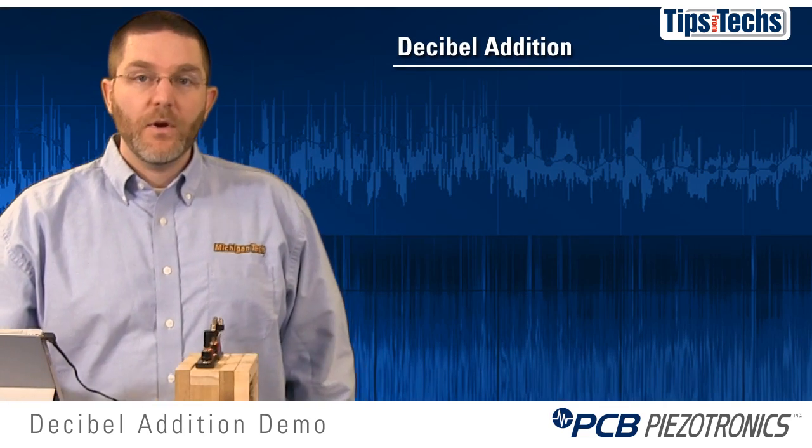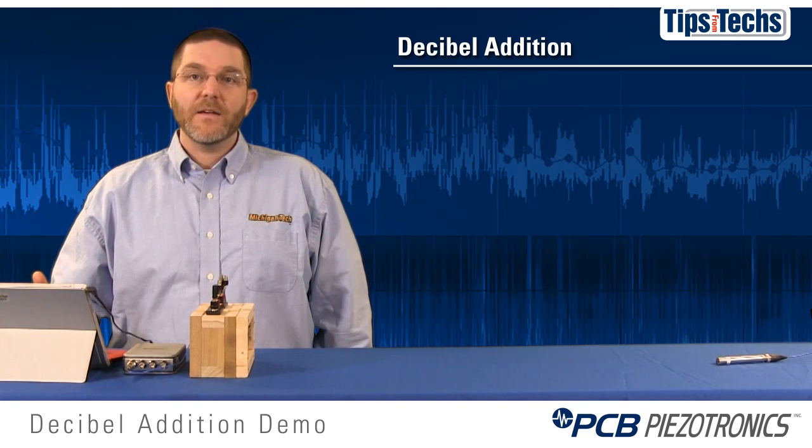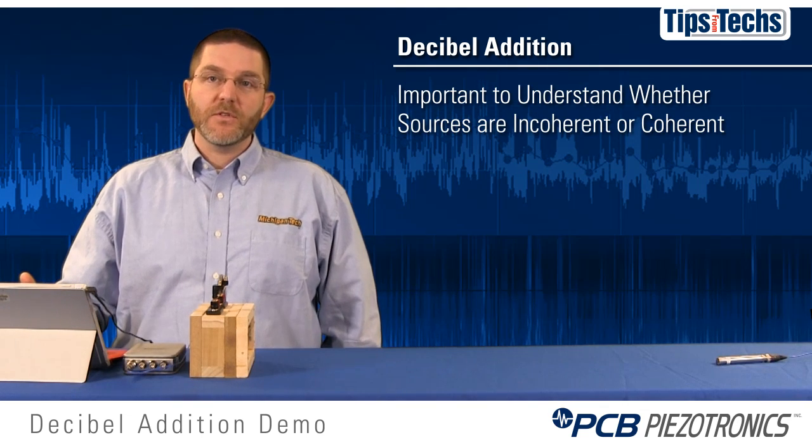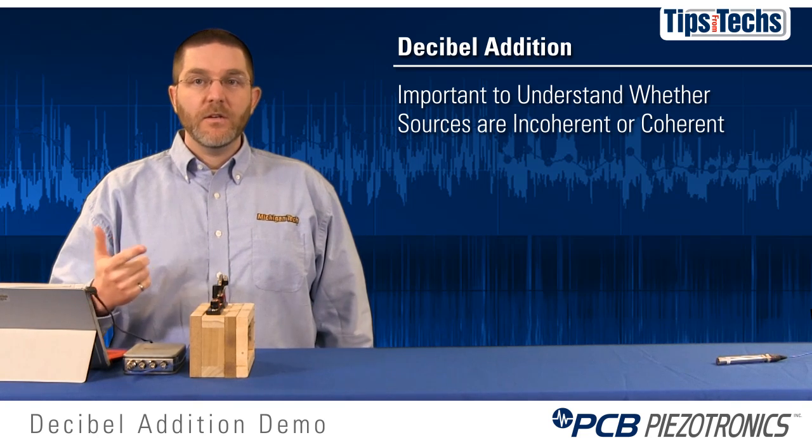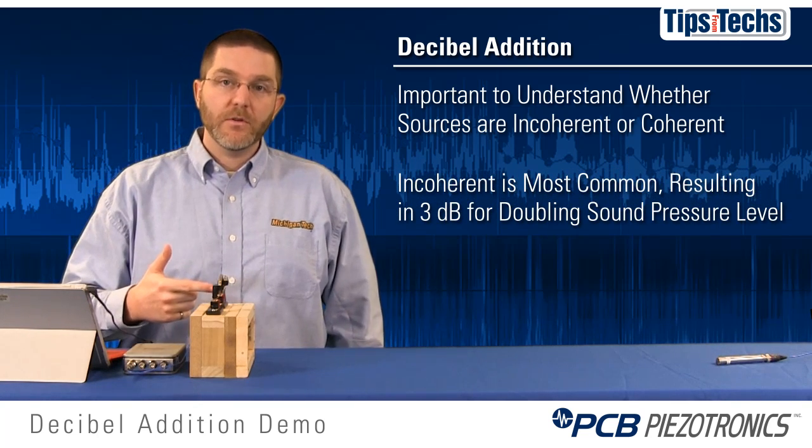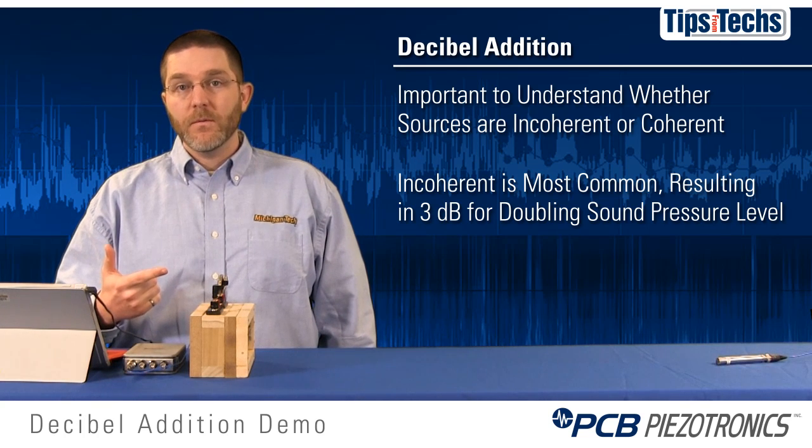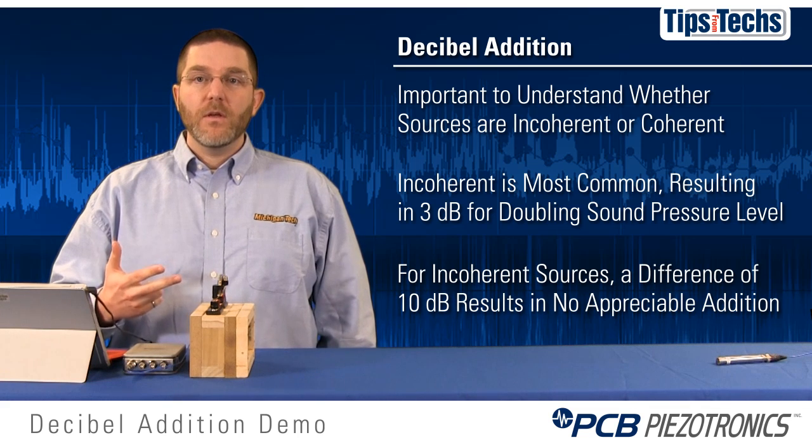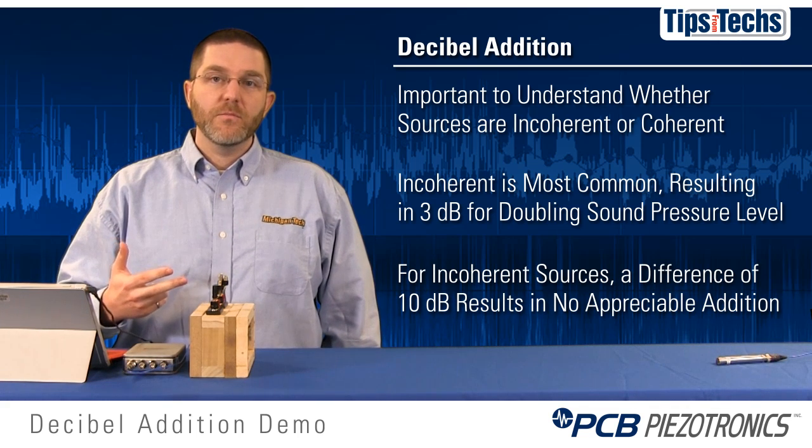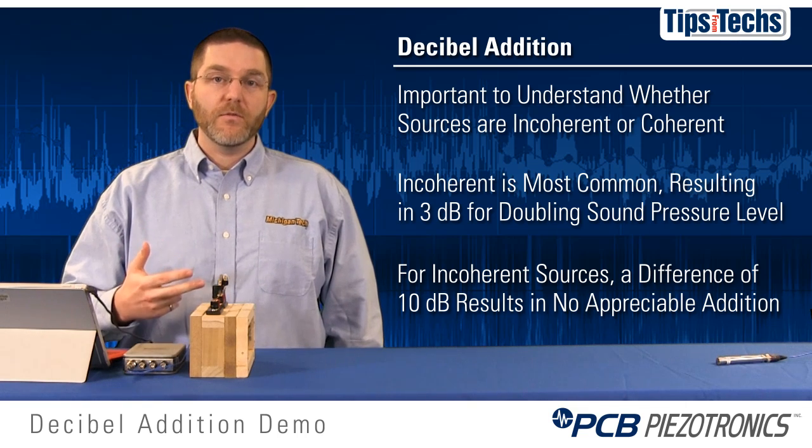The takeaways from this video are threefold. First, when adding sound pressure levels it's important to understand if your sources are incoherent or coherent. Secondly, incoherent addition is by far the most common in acoustics and results in a 3 dB increase for doubling of sound pressure level. And lastly, for incoherent sources, a 10 dB difference in levels between two sources results in no appreciable addition to the higher level.